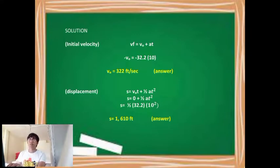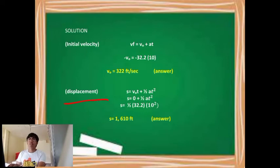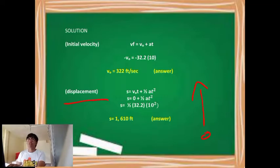For displacement, we use S equals initial velocity times t plus one-half times acceleration times t squared. Since we now have initial velocity, we substitute: S equals one-half times 32.2 times 10 squared — it is positive because the stone is thrown vertically upward. So S equals 1610 feet. That is our final answer.